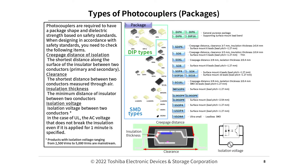Types of photocoupler packages. Photocouplers are required to have a package shape and dielectric strength based on safety standards. When designing in accordance with safety standards, check the following: creepage distance of isolation — the shortest distance along the surface of the insulator between two conductors (primary and secondary); clearance — the shortest distance between two conductors measured through air; insulation thickness — the minimum distance of insulator between two conductors; and isolation voltage — in the case of UL, the AC voltage that does not break insulation even if applied for one minute. Products with isolation voltage ranging from 2500 V RMS to 5000 V RMS are mainstream.